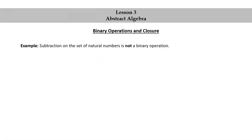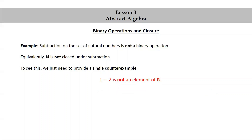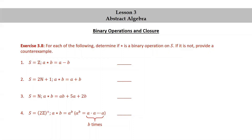Subtraction on the set of natural numbers is not a binary operation — equivalently, the set of natural numbers is not closed under subtraction. To see this, we just need to provide a single counterexample. A counterexample is an example used to show that a statement is false. For our counterexample, we could use 1 minus 2: 1 minus 2 is not an element of the set of natural numbers. Another exercise: for each of the following, determine if star is a binary operation on S; if it is not, provide a counterexample. Pause the video and try this exercise yourself.